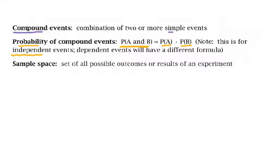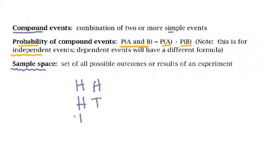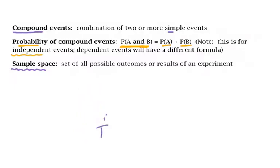A sample space is when you write down all the possibilities that could happen. So if I'm tossing a coin, my sample space is heads and tails. If I'm tossing two coins, I could get heads-heads, heads-tails, tails-heads, or tails-tails. That's the sample space. Depending on how many things you're doing and how many outcomes each event has, the sample space can be quite large.